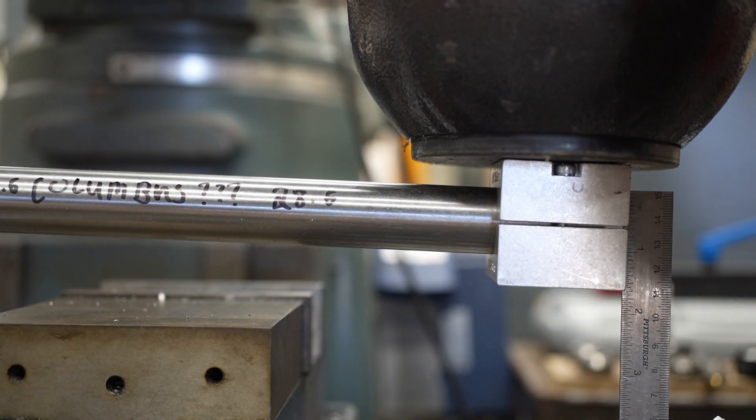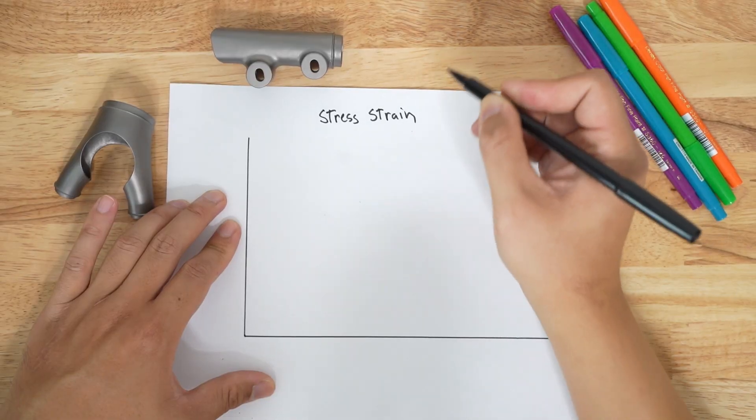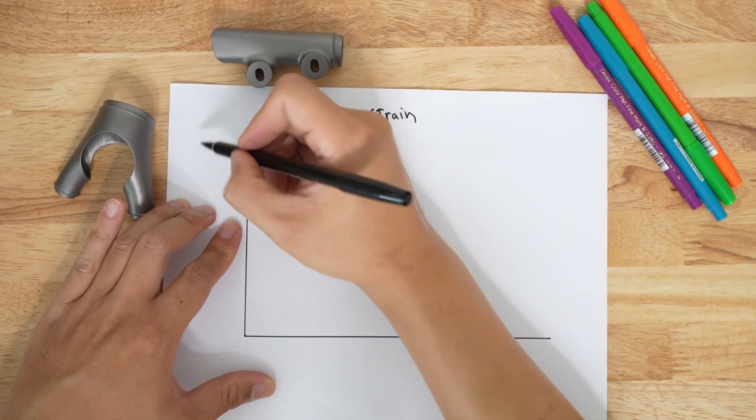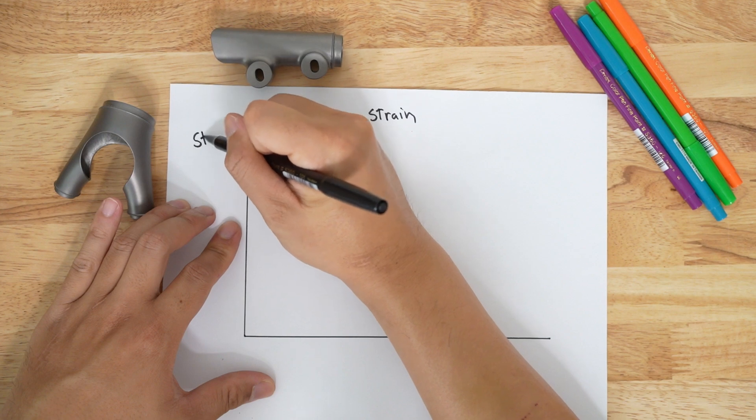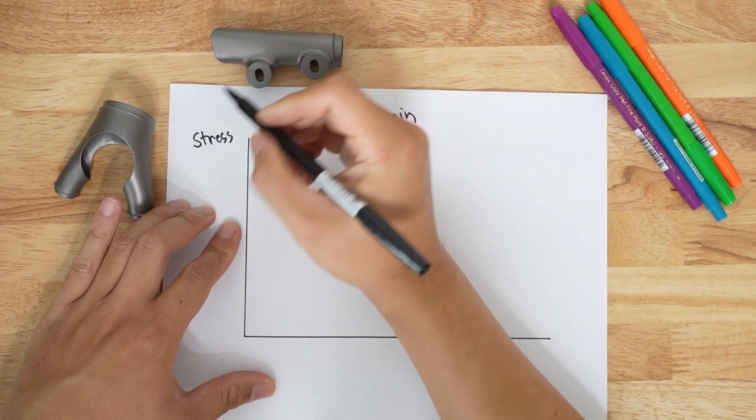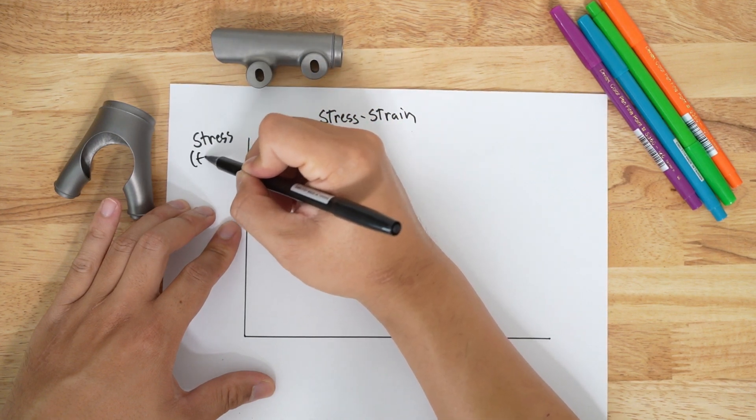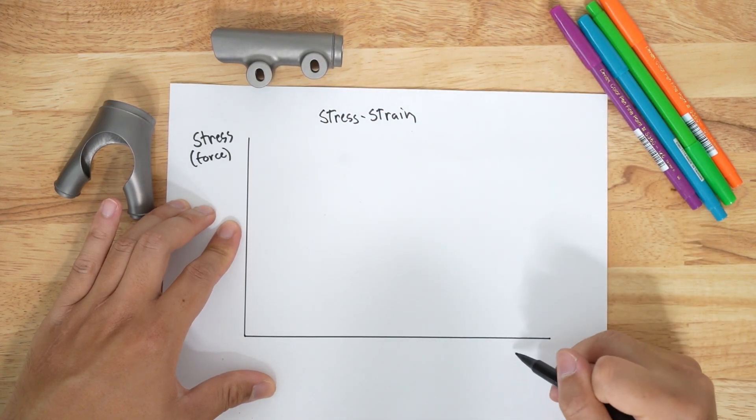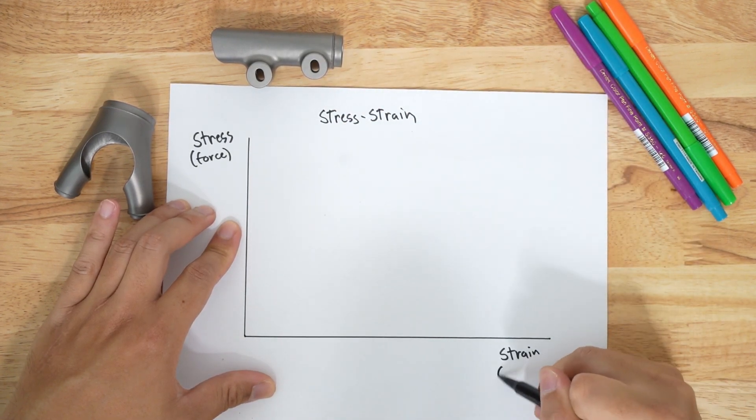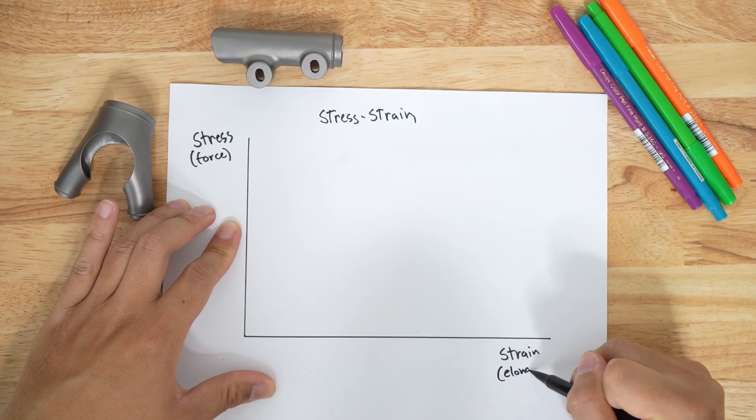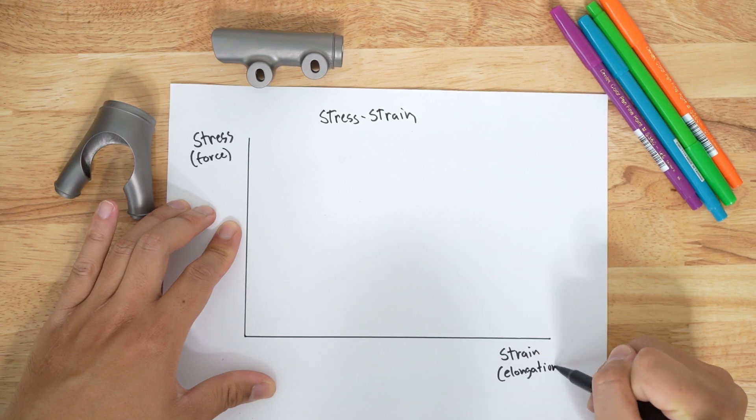To understand stiffness and strength, you need to understand the stress-strain curve. The stress-strain curve is a generalized method of visualizing how a material acts under a load. On the y-axis, you have stress, which is the amount of force that the material experiences. On the x-axis, you have strain, which is the amount of elongation or stretch that the material experiences.